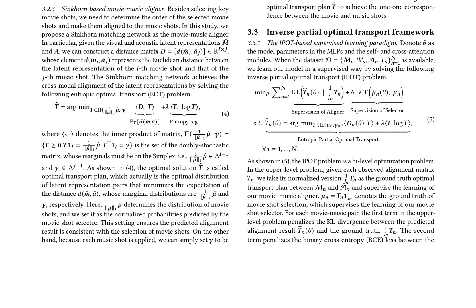The authors highlight the advantages of using the synchron matching network, which encourages the optimal transport plan to achieve 1-1 correspondence between the movie and music shots. Overall, the paper proposes a novel framework for music-guided movie trailer generation, which leverages the power of inverse partial optimal transport to learn a multimodal representation and matching model. The authors' approach addresses the limitations of existing methods and has the potential to generate high-quality trailers consistent with the music and movie content.